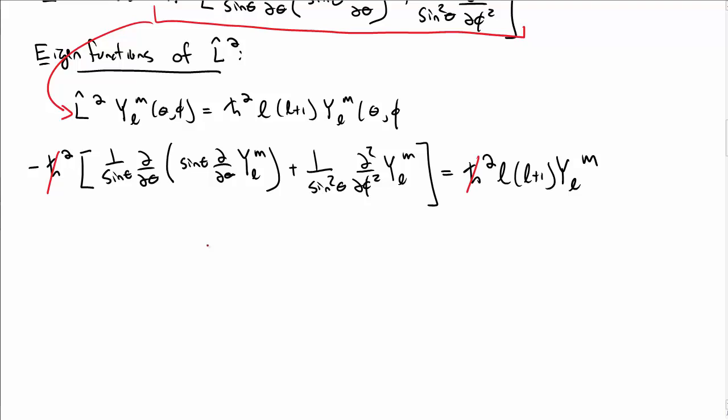In particular, we know that Y_lm, we wrote earlier as a constant times a function of theta, P_lm of theta, and an e to the i m phi. The constants will just cancel out on all sides, because they're on each side. We can insert the theta and phi dependence, though, in here.